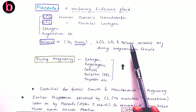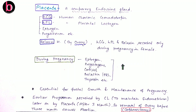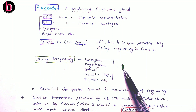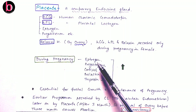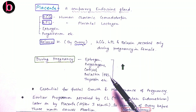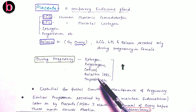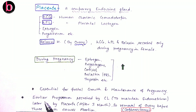HCG, HPL, and relaxin are secreted only at the time of pregnancy in the female. During pregnancy there is also a huge increment in hormone levels such as estrogen, progesterone, cortisol, prolactin (PRL) — also known as luteotropic and mammotropic hormone — and thyroxin. All these hormones are very essential for fetal growth and maintenance of pregnancy.